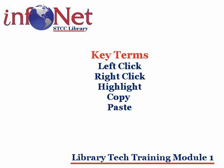Before we end our lesson, let's go over the key terms we learned. Left-click: to press the left mouse button with your index finger — it should make a clicking sound. Right-click: to press the right mouse button with your middle finger — it should make a clicking sound. Highlight: to copy and paste, you need to highlight the text by left-clicking at the beginning, holding down the left mouse button, dragging in the direction you want, then releasing. Copy means you want to copy a piece of information into the computer's temporary memory. Paste means you want to create a copy of whatever information you've copied to the computer's temporary memory in a new location.